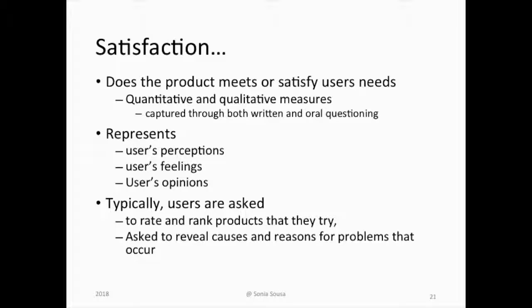The satisfaction dimension is the most tricky one to measure within usability testing, as it is no longer measured with only quantitative measurements. We are not interested only in how efficient it is or how easy it is to fulfill tasks. We cannot simply measure time-to-task, number of errors, or number of clicks. We need to look for how the user perceives the product, how satisfied they are, what emotions the product provokes, and what is the user's opinion. That is why we use more qualitative measurements like interviews or written and oral questionnaires.